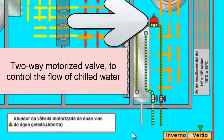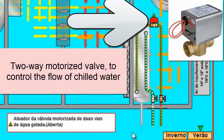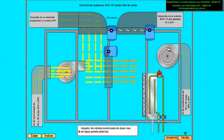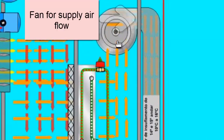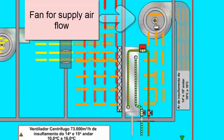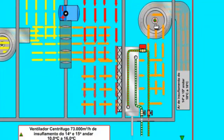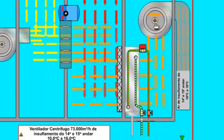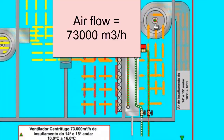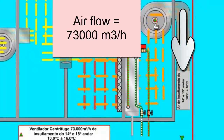2-way motorized valve to control the flow of chilled water directed to the coil. Supply centrifugal fan — it is in charge of supplying the air flow with the necessary pressure so that it reaches all the grills of the premises. The air temperature should be between 10 and 15 degrees Celsius. This fan has constant speed, and at this moment it manages a flow of 73,000 cubic meters per hour of air.